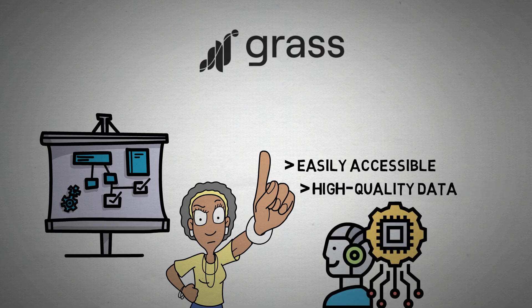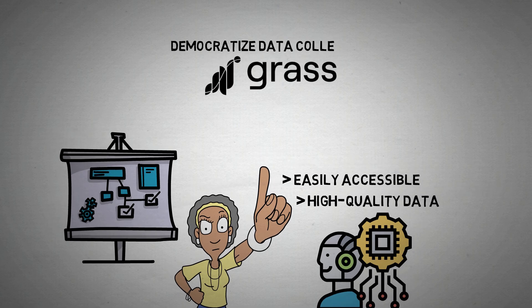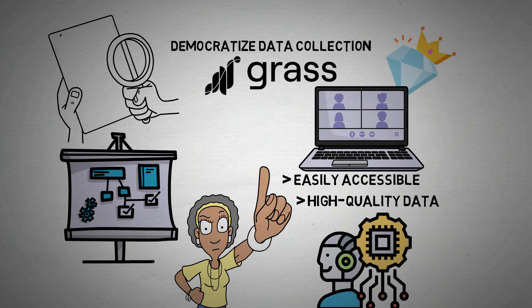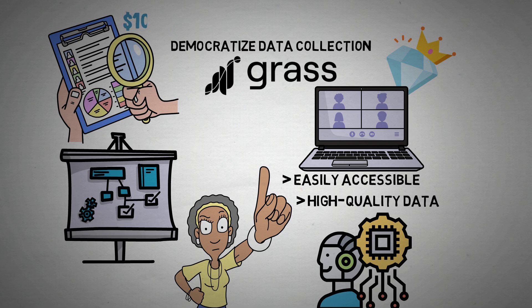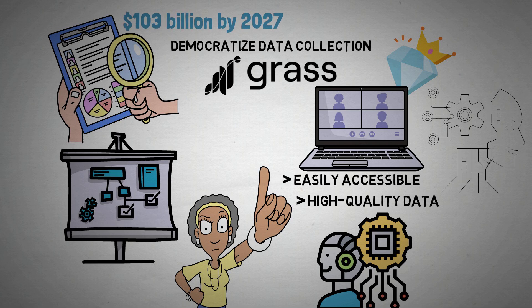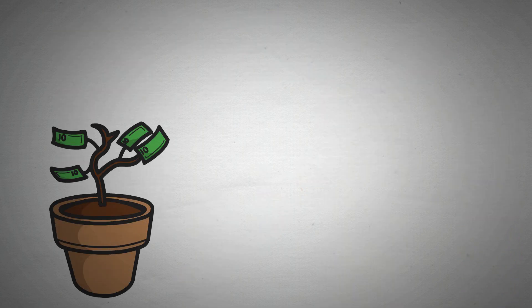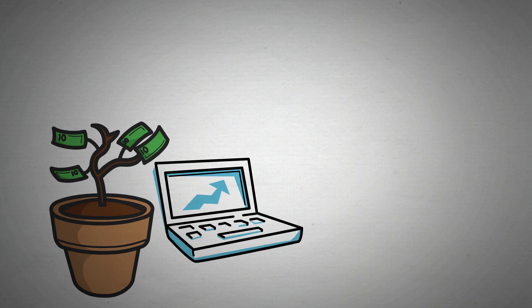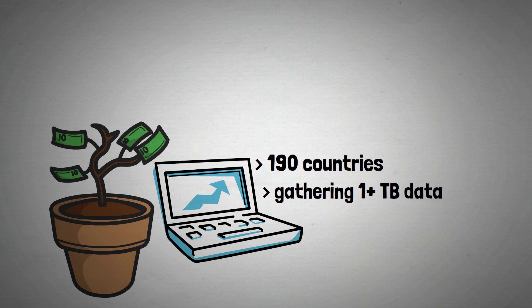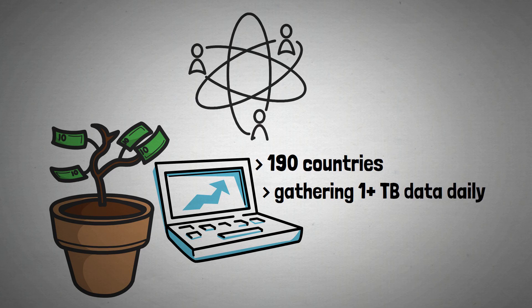GRASS was created to democratize data collection while adding value for regular internet users, as the global big data market is predicted to reach $103 billion by 2027, and the cost of developing AI is still rising. Since its inception, GRASS has grown significantly, reaching 190 countries and gathering more than 1 terabyte of data every day from its user base of over 2 million.